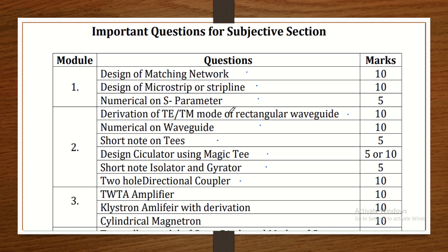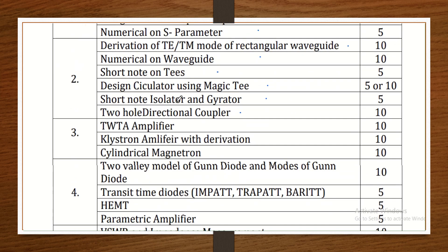These are the probable questions that can be asked for 10 or 5 marks in the examination. Module 2's weightage is more, so we expect two questions from it. Otherwise, the maximum per chapter is one question. Module 3 is TWT Amplifier — that means microwave tubes. For TWT Amplifier, this is pure theory. You need to create a neat and clean construction diagram and explain it.